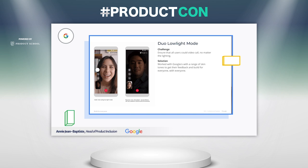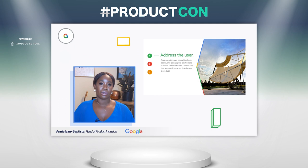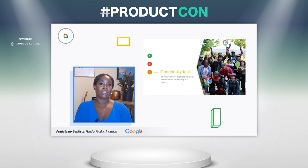I'd like to walk you through three principles of product inclusion. The first is to address the user — thinking about 12 dimensions of diversity and their intersections, things like age, race, ability, gender, and more, when building for everyone and with everyone. The second is to start with equity. This shouldn't be an afterthought or a checklist. Think end to end about your product design process and identify key points where you can ask who else and bring an inclusive lens.